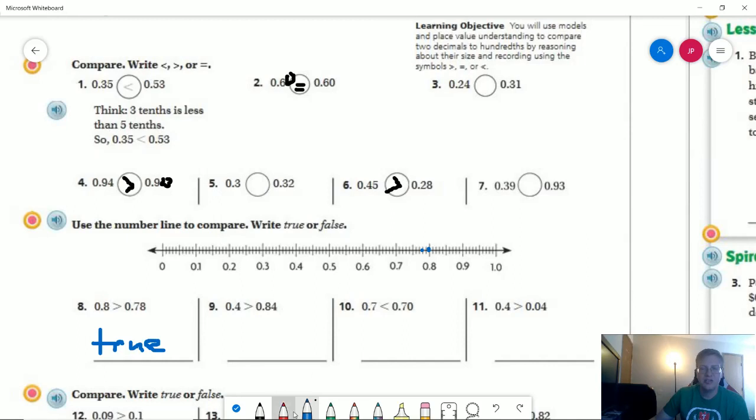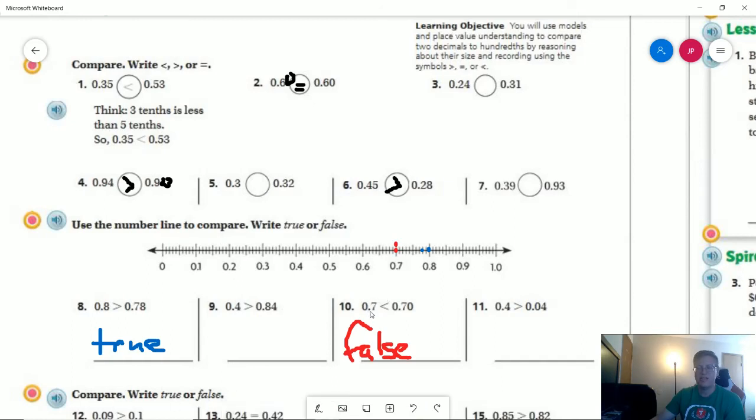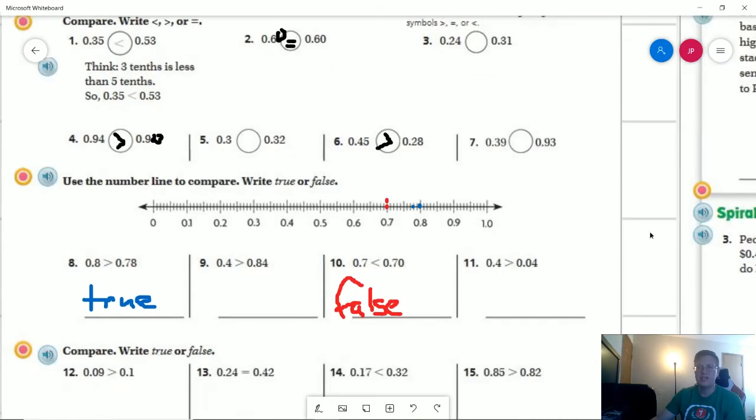For number ten, seven tenths would be right here. If I do seventy hundredths, it would go in the exact same spot, so I'd have two dots on the same spot. This is not true—this would be false because we should have an equals sign. It should be seven tenths equals seventy hundredths.